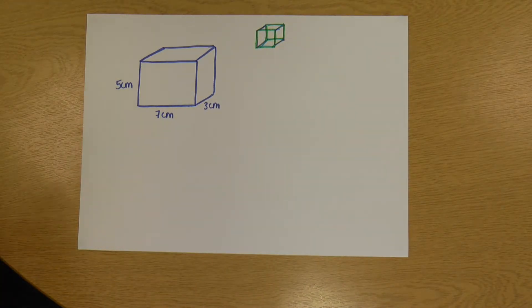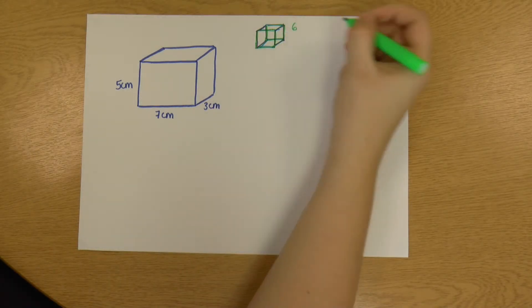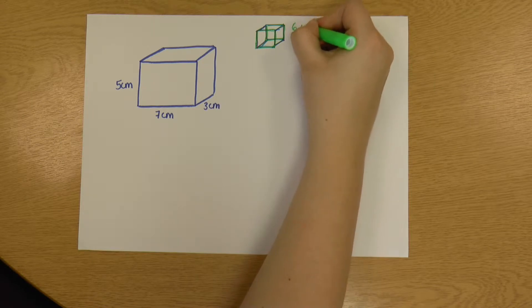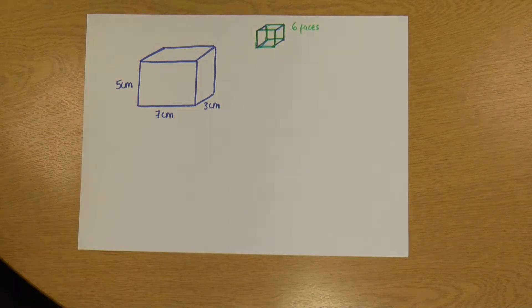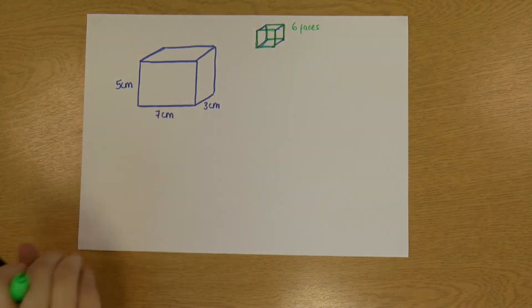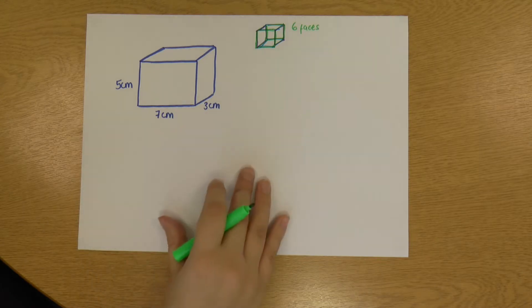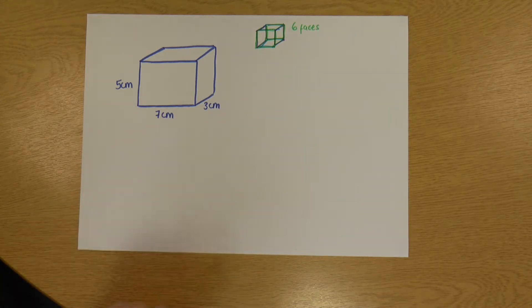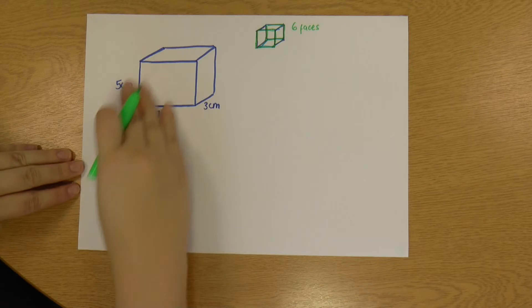So we've got six sides in total on our cube or cuboid, and we can call those surfaces. So we've got six surfaces, or six faces, as we sometimes call them. So surface area is where we add up the areas of all of those faces. We need to bear in mind the parts we can't see.